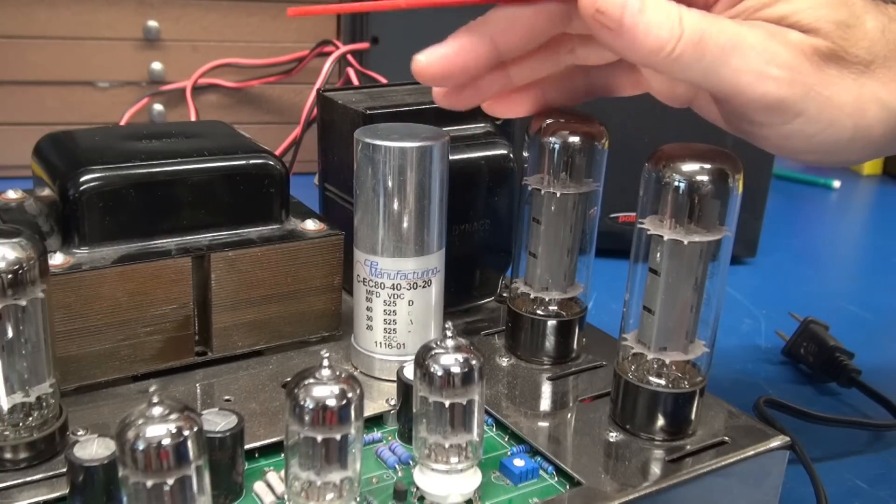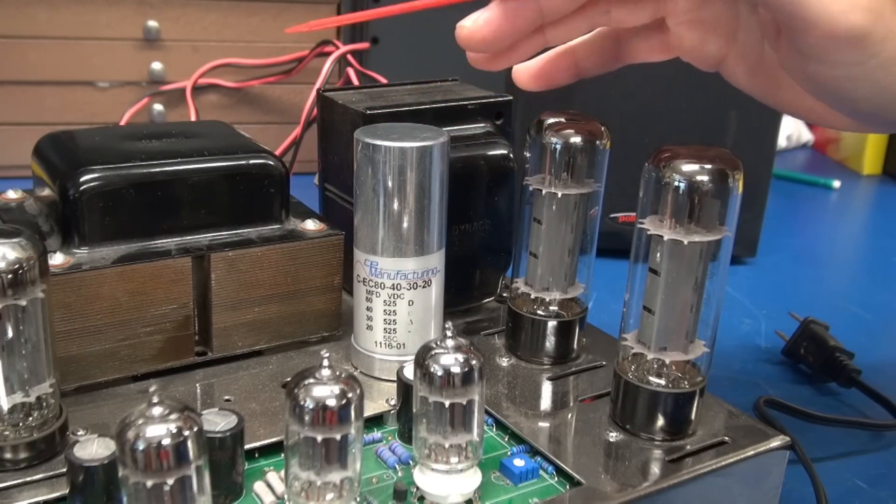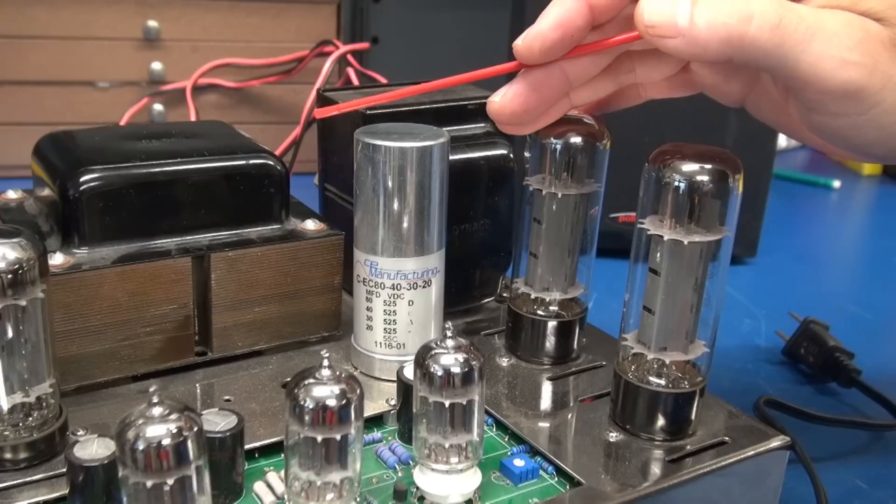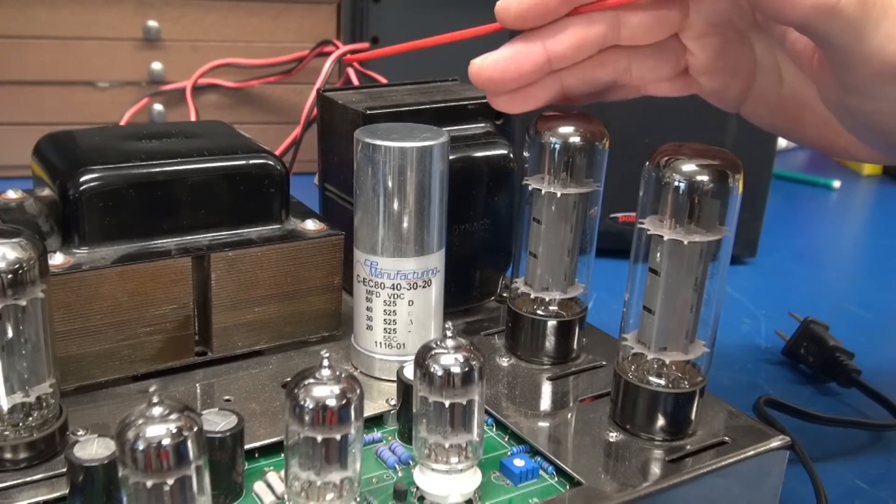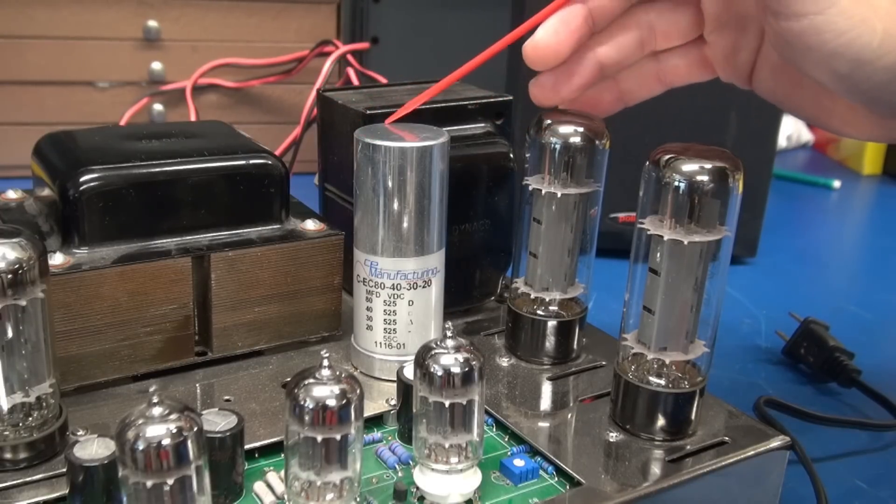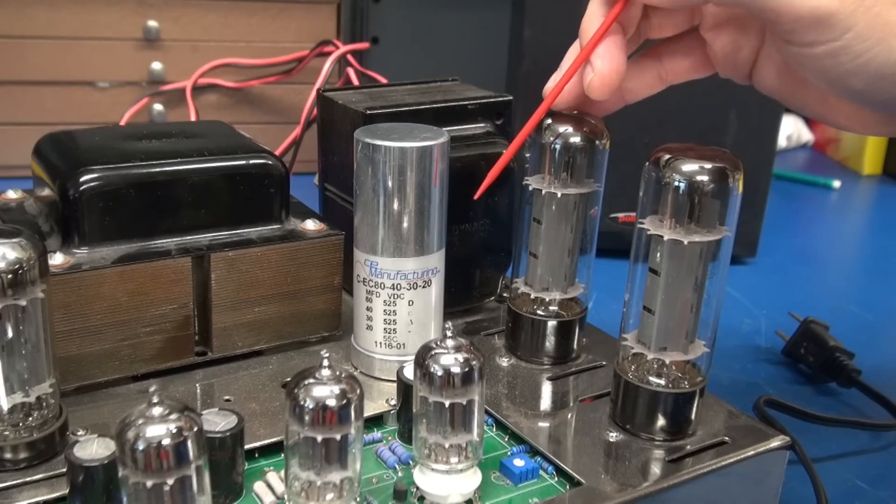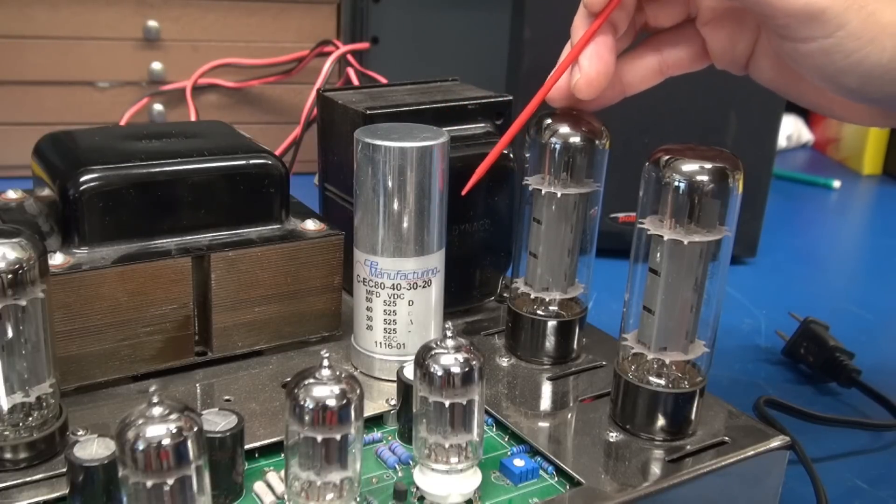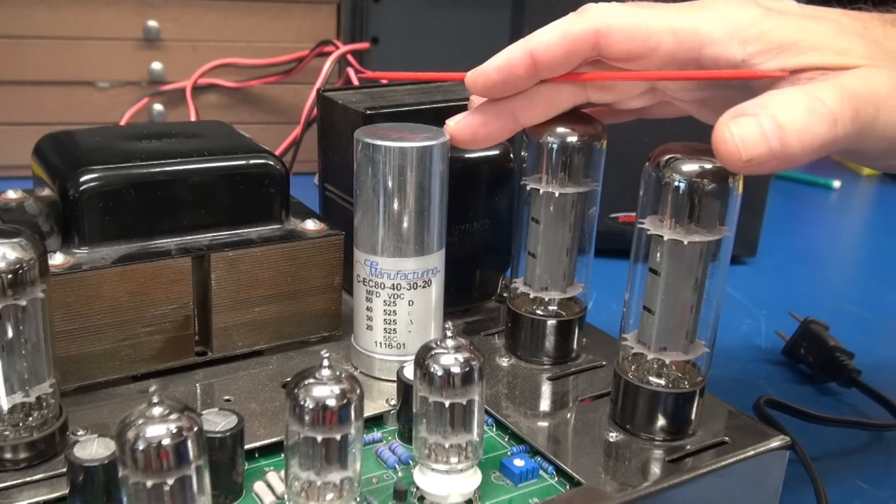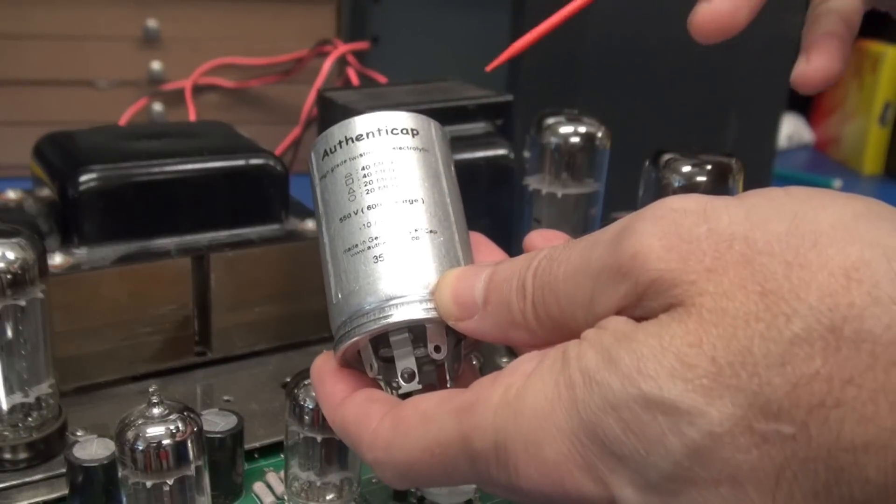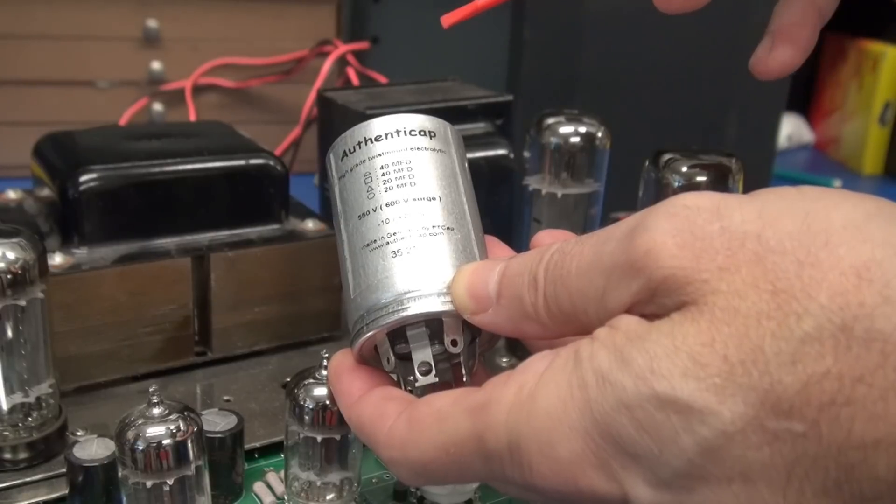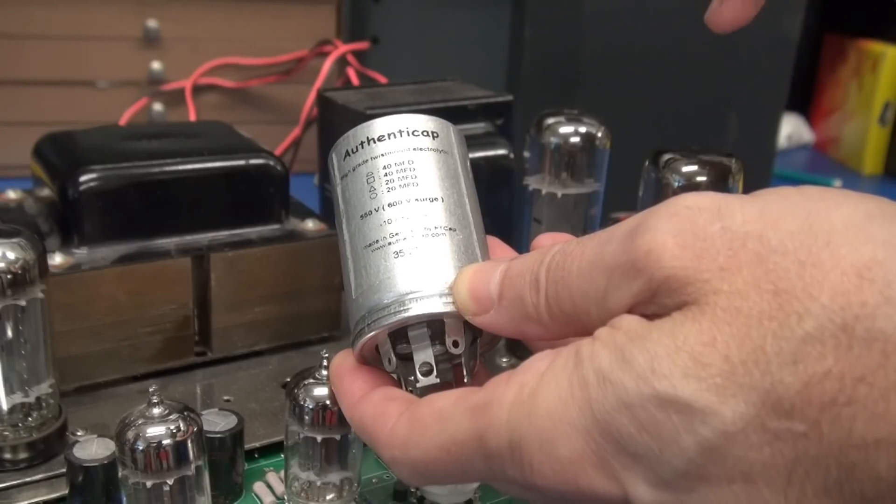For your reference, these Dynaco amplifiers run high voltages that can peak over 500 volts DC. Be very cautious when replacing them. For the CE caps, I would not go lower than the 525 volt series. To replace this cap, I'm going to install the F&T authentic caps, which are rated at 550 volts with a 600 volt surge.